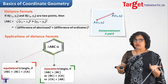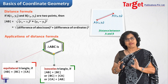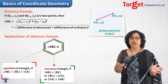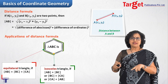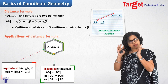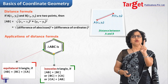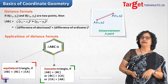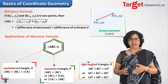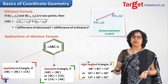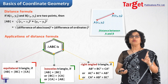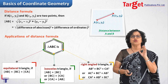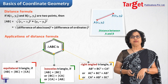Note that an equilateral triangle also satisfies the isosceles condition, but here we mean exactly two sides equal. For a right-angled triangle, use the Pythagorean theorem: the sum of the squares of two sides equals the square of the third side — for example, AB² + BC² = CA².